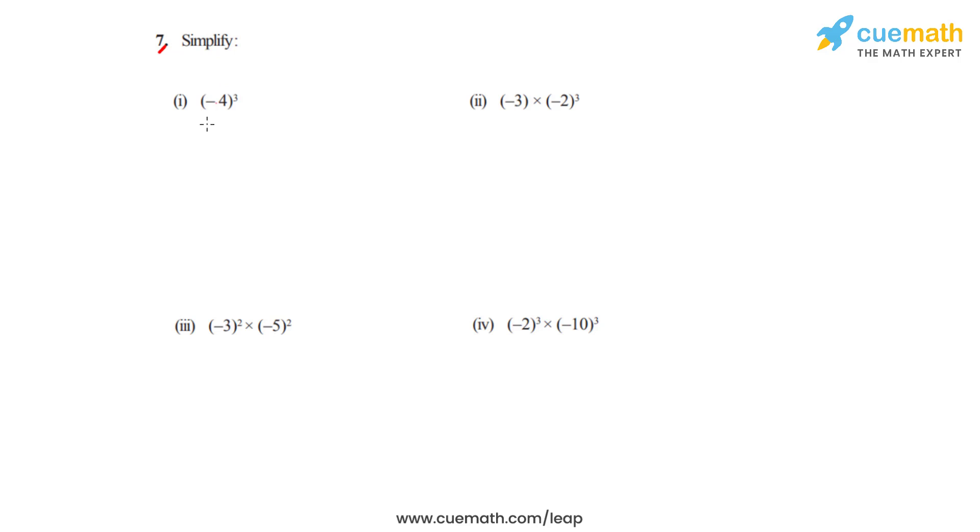Question number 7 asks us to simplify the given bits. We will start with the first bit wherein we have been given negative 4 which is raised to 3.